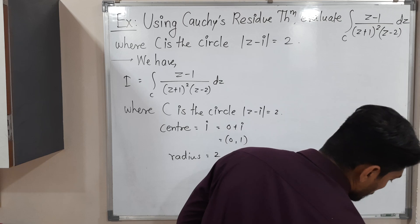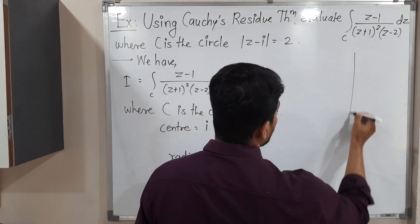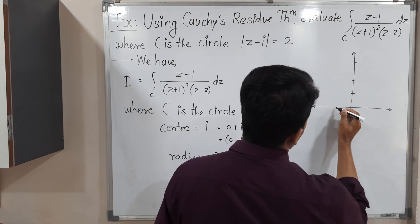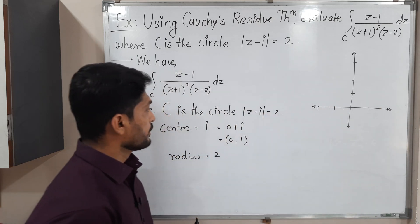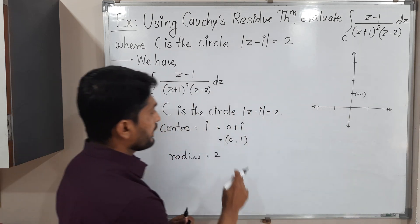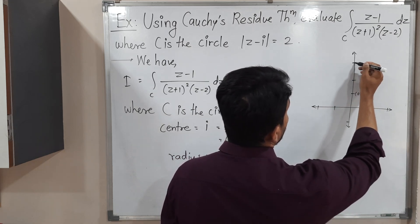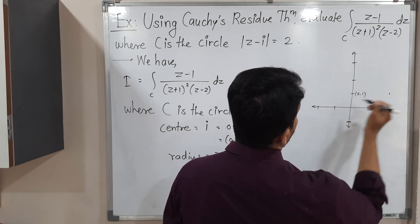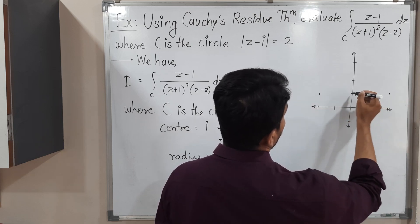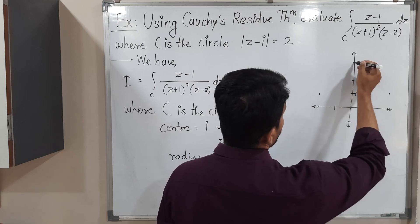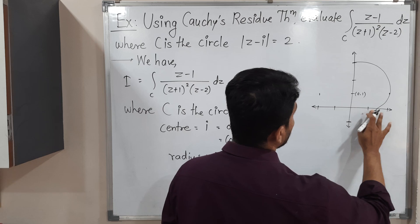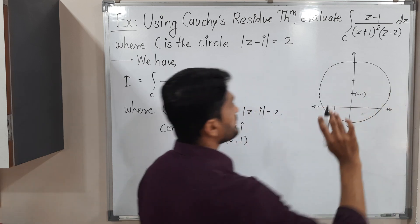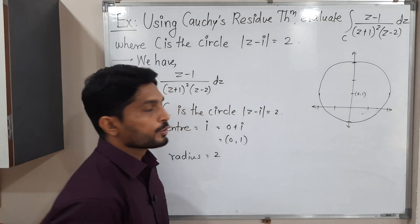So let me draw the circle here. We have the imaginary axis and the real axis with some scaling. The center is at (0, 1). With radius 2, the circle cuts the imaginary axis and passes through points at distance 2 from the center. This is the rough sketch of the circle having center at (0, 1) and radius 2.